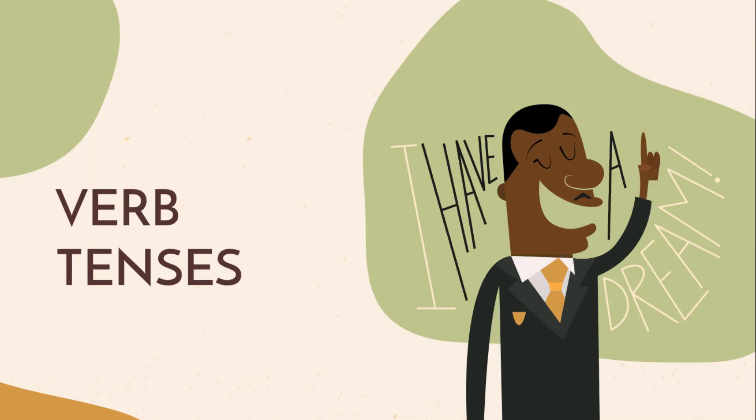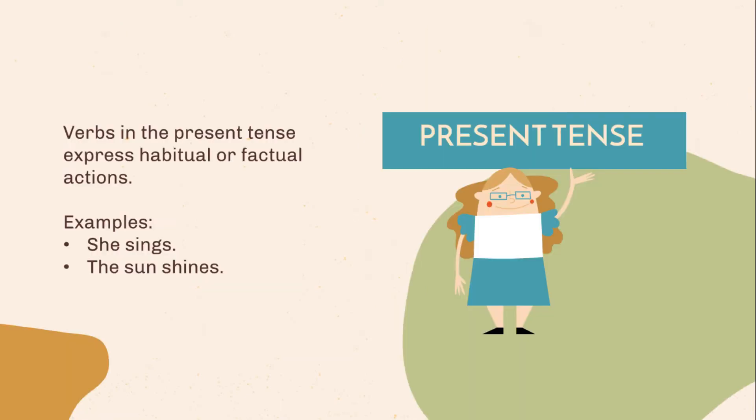Let's study one of the common problems in grammar: verb tenses. Present tense. Verbs in the present tense express habitual or factual actions. Examples: She sings. The sun shines.